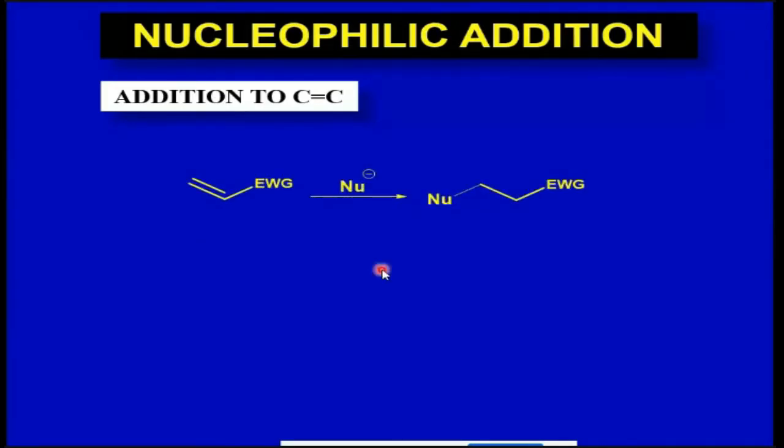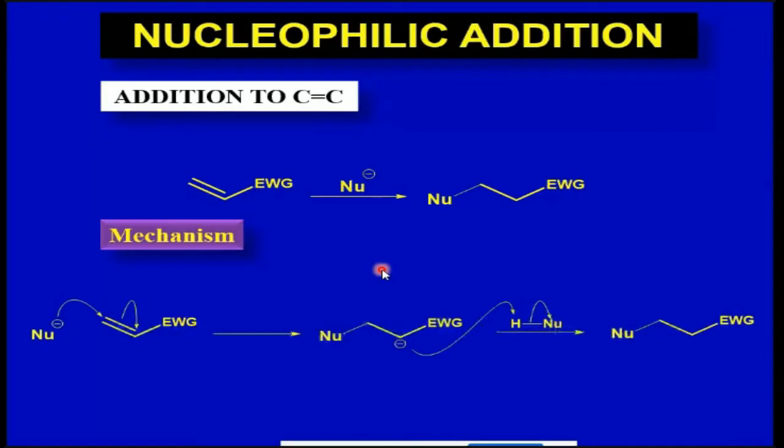So what is the mechanism? It is different from electrophilic addition. In electrophilic addition, the double bond attacks the electrophile, but here the nucleophile will attack the double bond. It will attack one of the two sp2 hybridized carbon atoms. After the attack, the intermediate that is formed is stabilized.